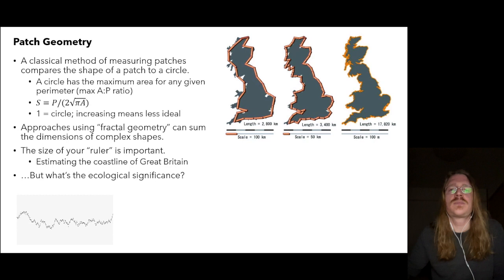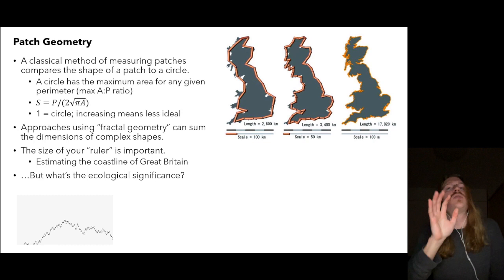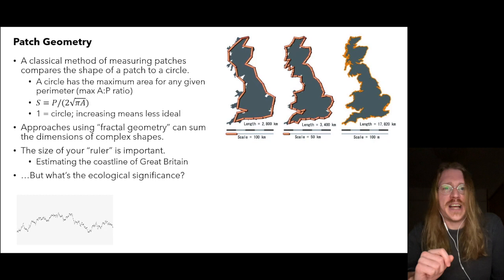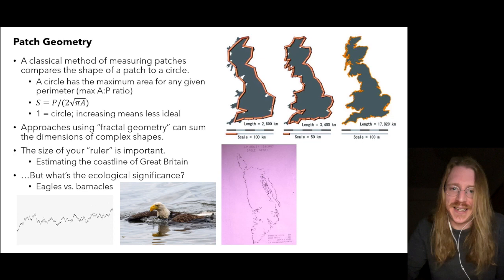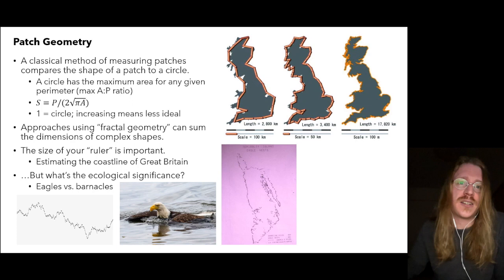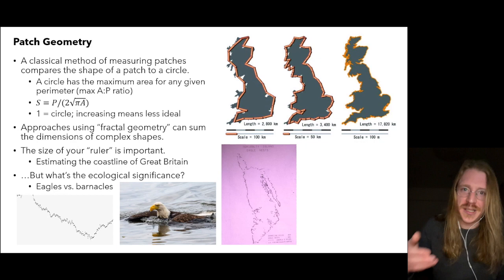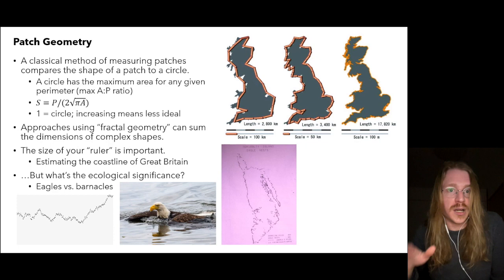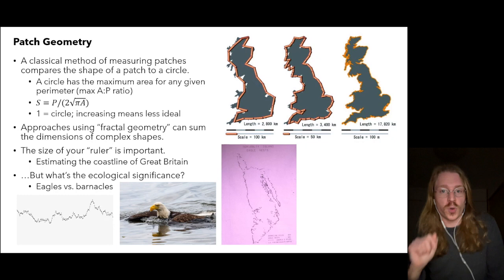Let's look at Admiralty Island, just off the coast of southeastern Alaska. On Admiralty Island, there's a huge number of eagles, and they all build their nests right along the coastline. Since each nest is located about 0.78 kilometers apart, we can use this distance to estimate how eagles perceive the geometry of the island. To the eagles, there is roughly 760 kilometers of coastline.